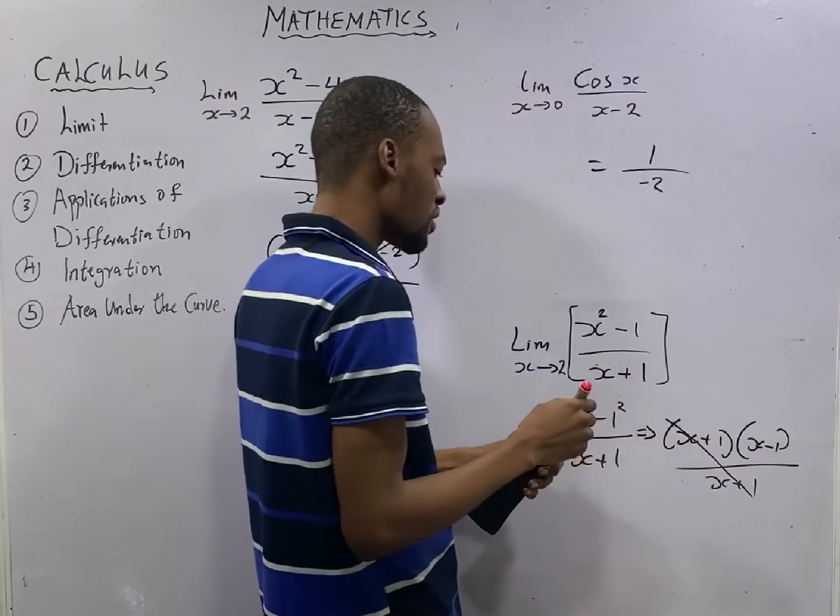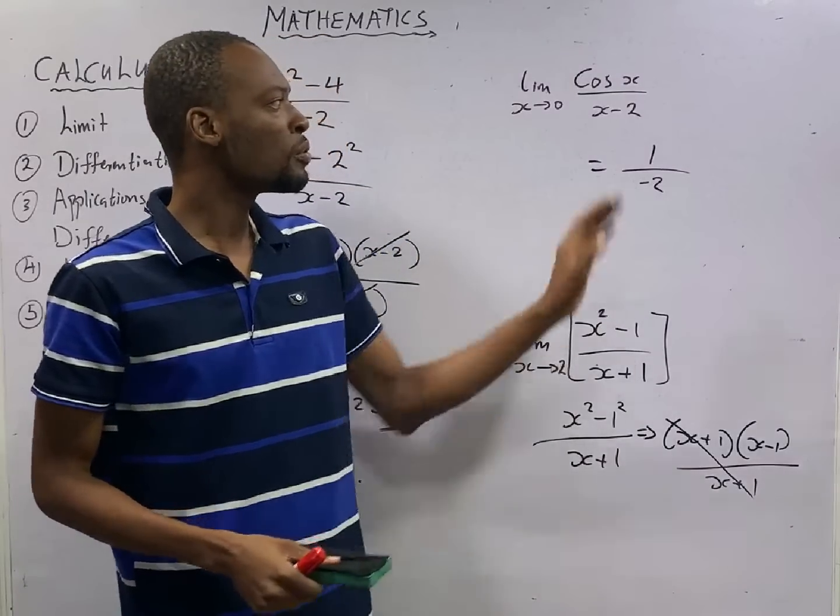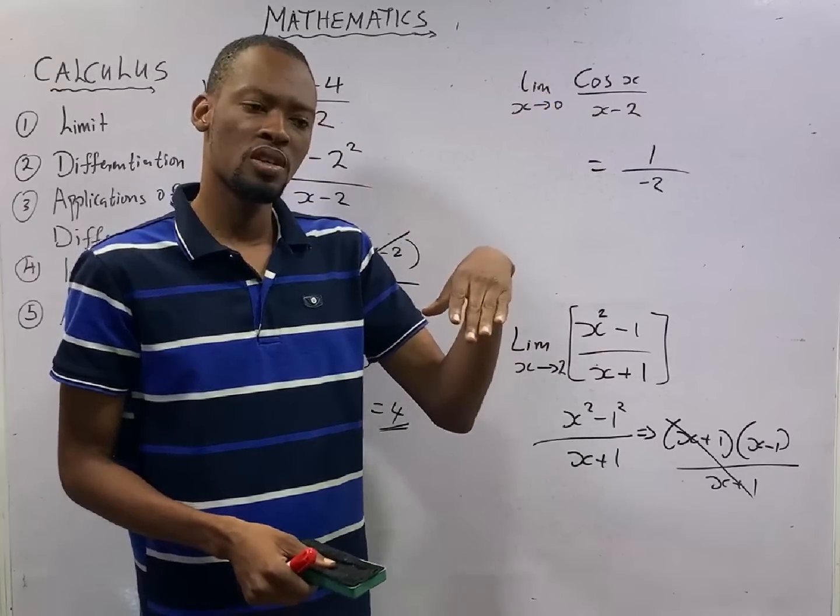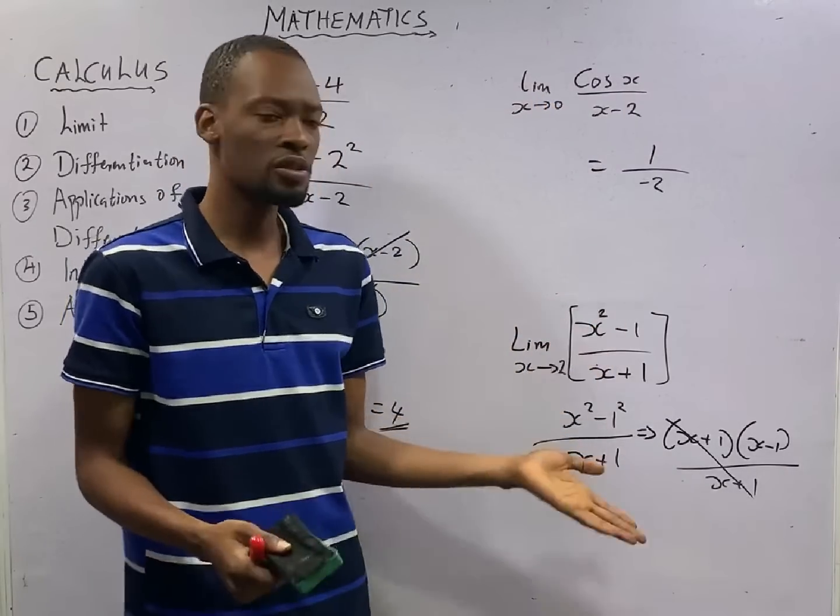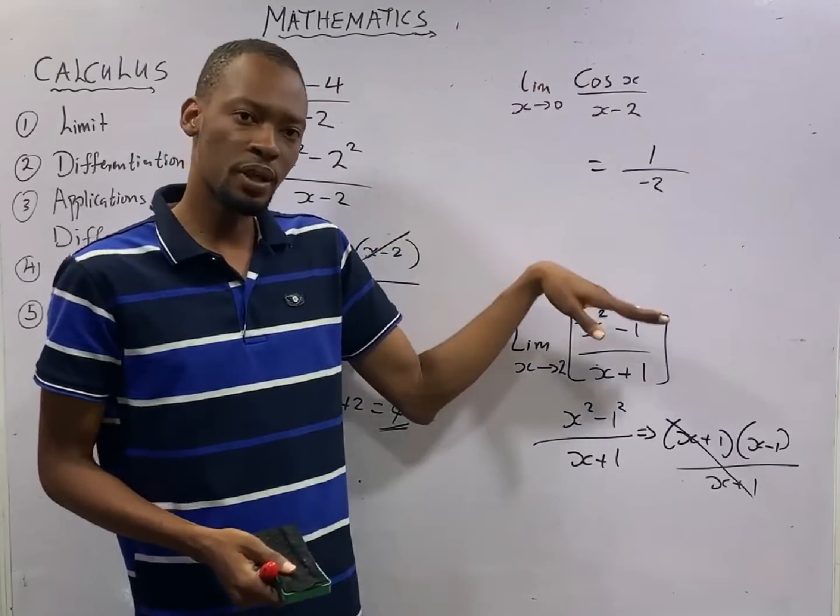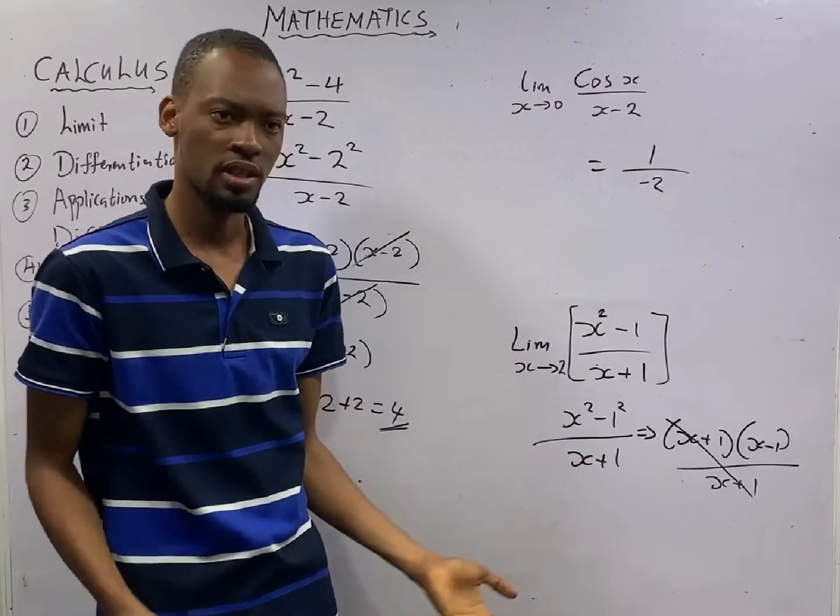Substitution did not give us 0, so we are good to go with that. If you are given a trigonometric function, after substituting you get 0, and you see that you cannot simplify the function, what to do is differentiate the top, differentiate the bottom, then you substitute the limit. With that, you will get a typical answer.